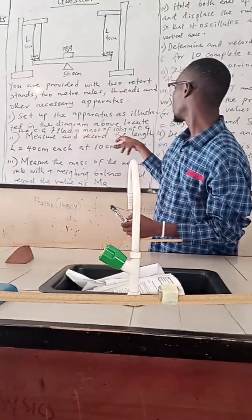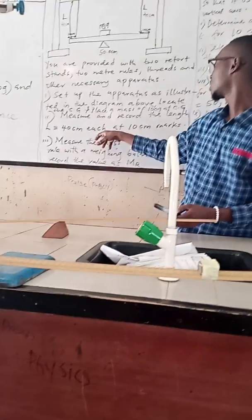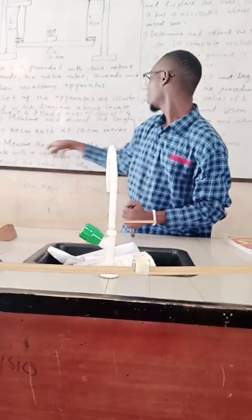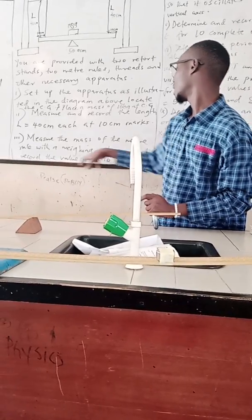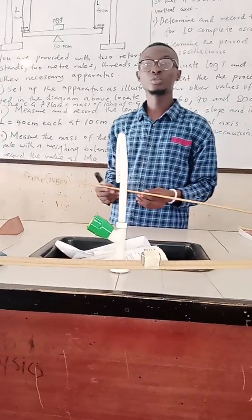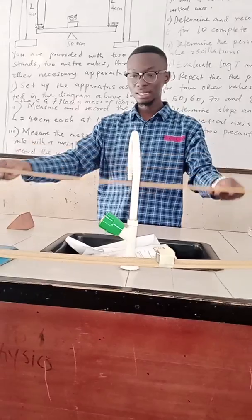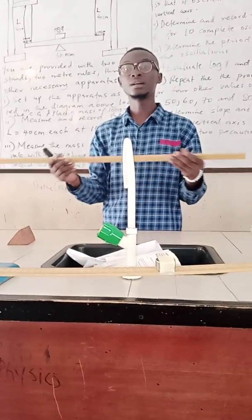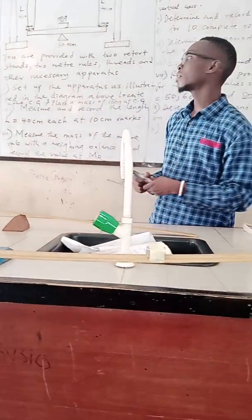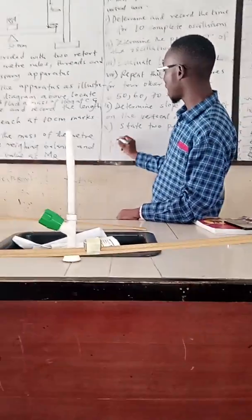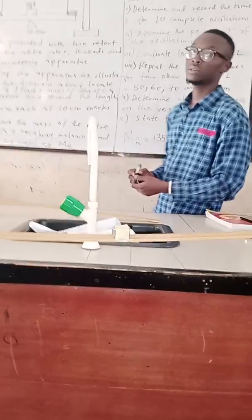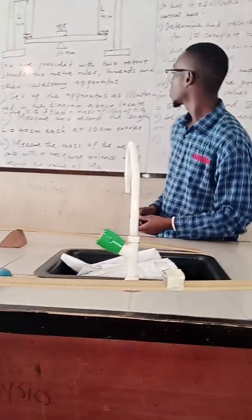They said measure the mass of the meter rule with a weighing balance and record the value MR. What you are going to do is get a digital weighing balance, place the meter rule on top of the digital weighing balance, and you will get the mass of the meter rule. For the first question, they arrived at the mass of the meter rule to be equal to 135 grams.